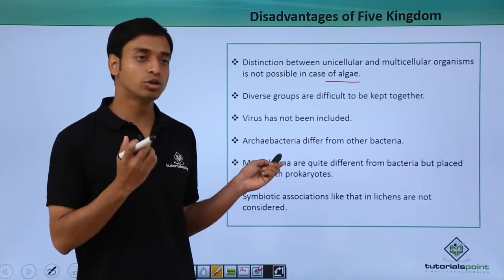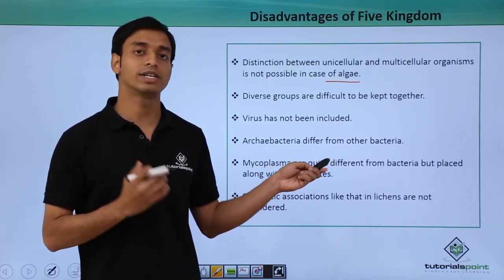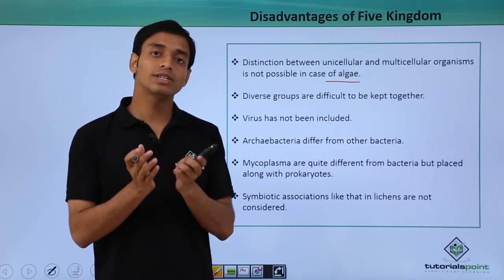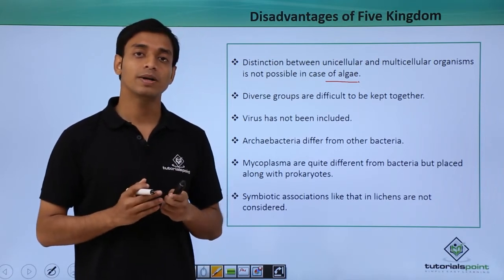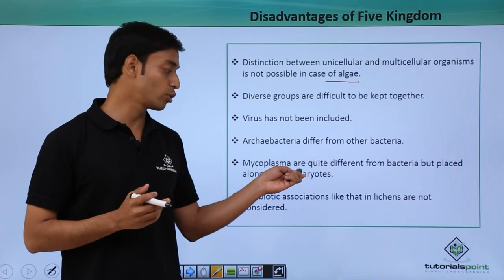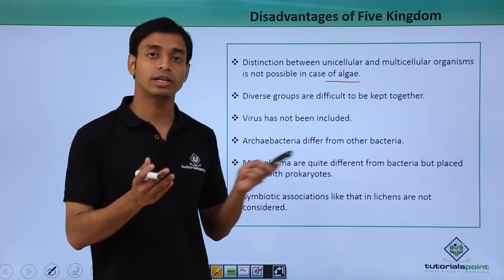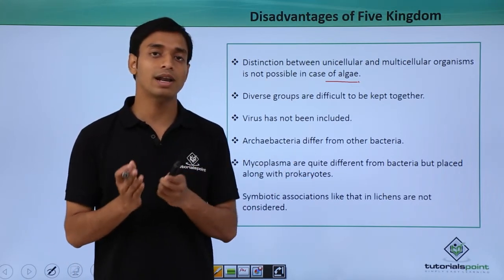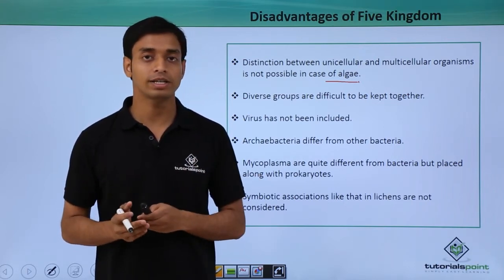Mycoplasma is a group of organisms similar to bacteria, but they do not have a cell wall. These mycoplasma are put together into the group of prokaryotes, which should not be done because there are quite a large number of differences from normal bacteria.